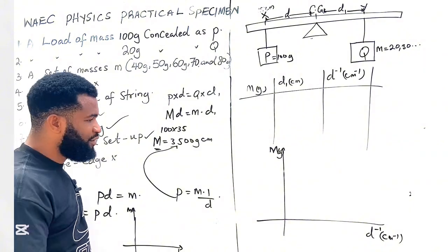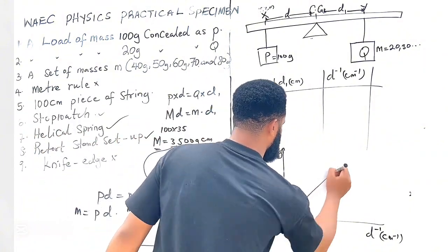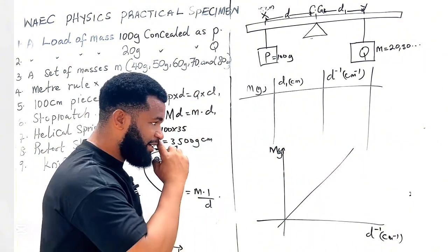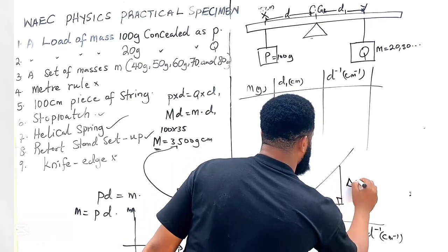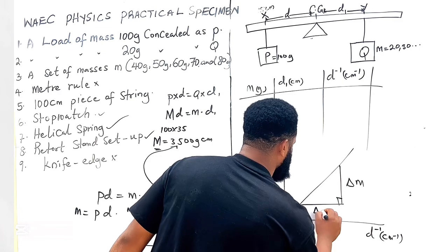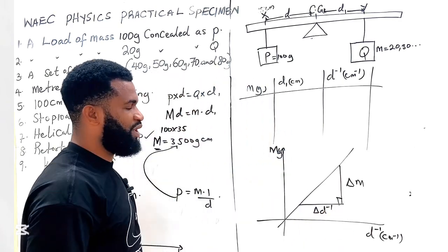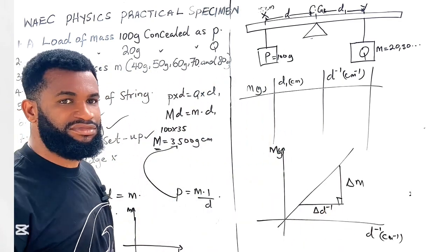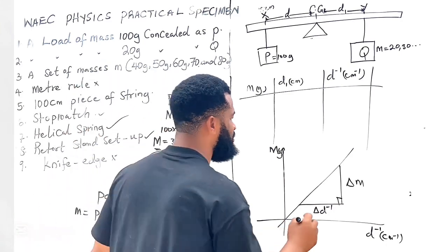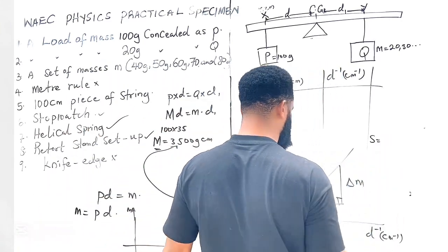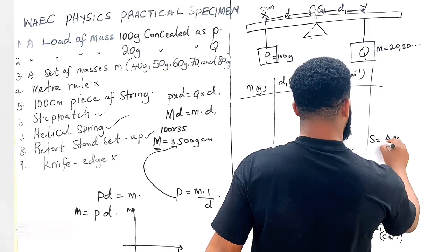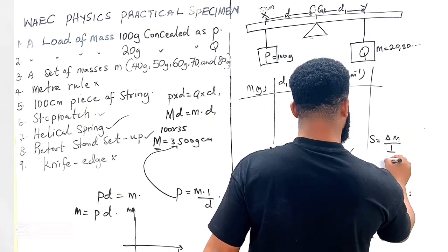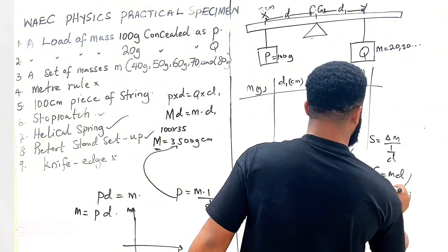look at this, because at the end your graph is going to be a straight line graph whereby your slope is going to be change in mass all over change in 1 over d. So slope is going to be Δm all over 1 over d. Slope is going to be m·d.